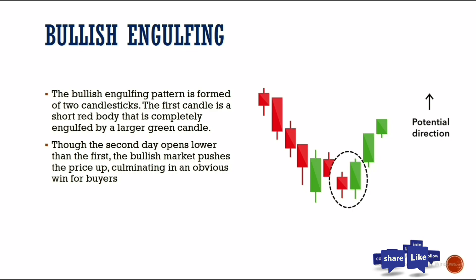With the bullish engulfing, we look at two candles. The first is a short red body that is completely engulfed by a larger green candle. You can see on the chart, after the market pushes to the downside and consolidates, a strong bullish candle engulfs the red candle — this indicates a potential reversal and a direction to the upside.